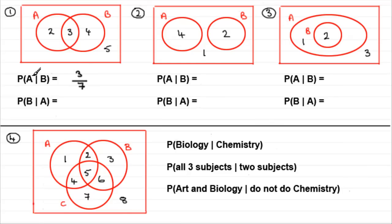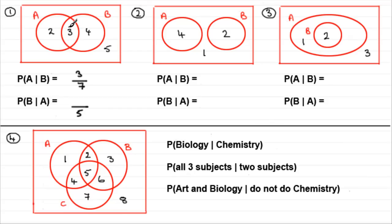The probability that someone does art given that they do biology is three out of seven. What about the probability that someone does biology given that they do art, P(B|A)? We know they do art, so that's out of five people — our denominator. And out of those five, only three do biology. So it's three out of five.